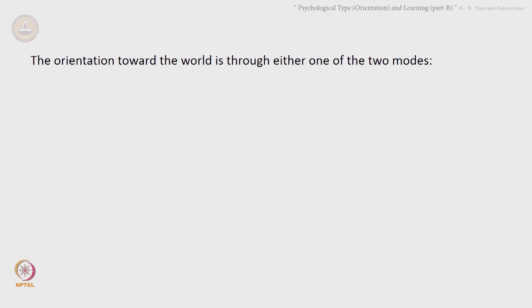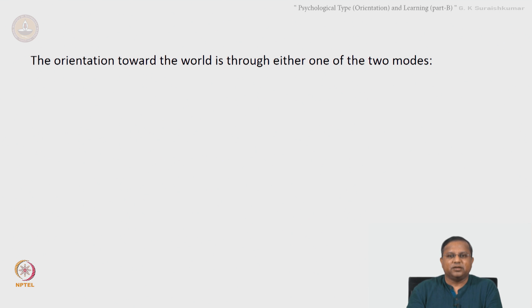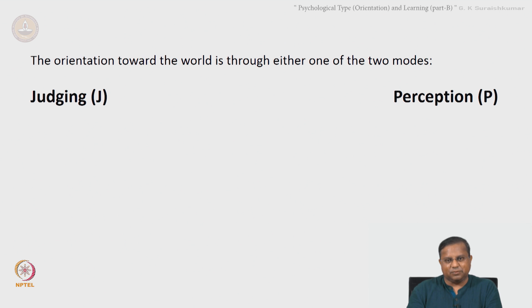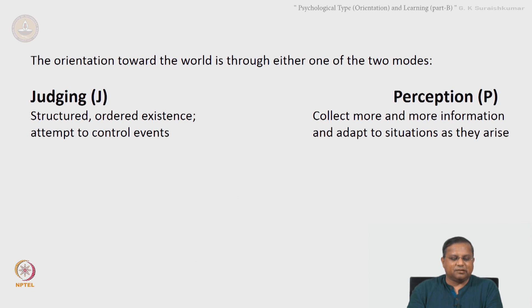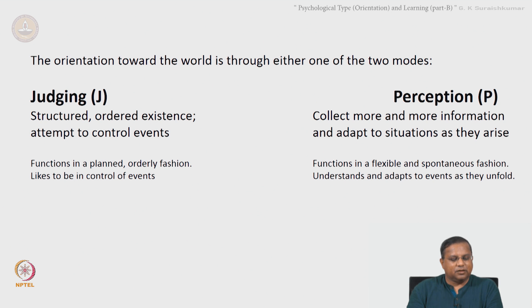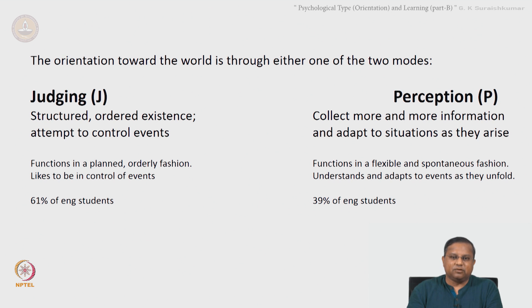Now, after perceiving and processing information, the orientation toward the world is through either judging J type or perception P type. J type are structured, prefer ordered existence, and attempt to control events. The P type collect more and more information as they go along and adapt to situations as they arise. The J type function in a planned orderly fashion, while the P type function in a flexible and spontaneous fashion. 61 percent of engineering students are J type and 39 percent are P type in that study, which included a reasonably large number of students.